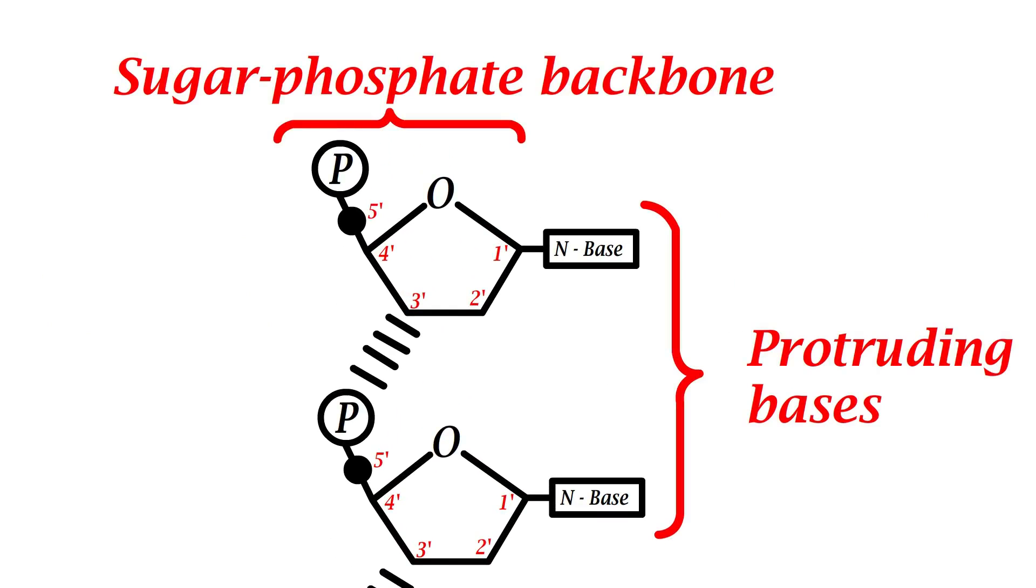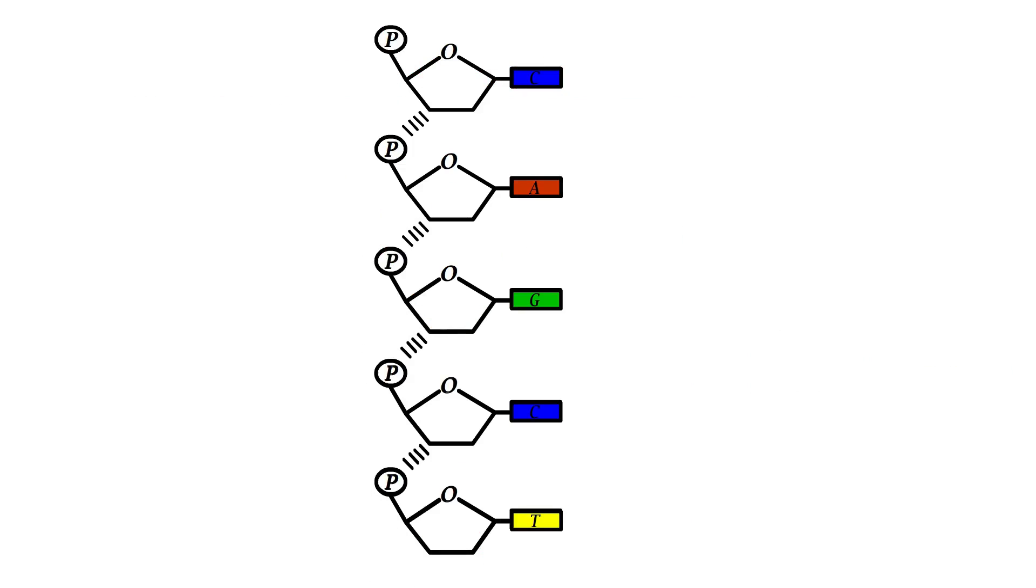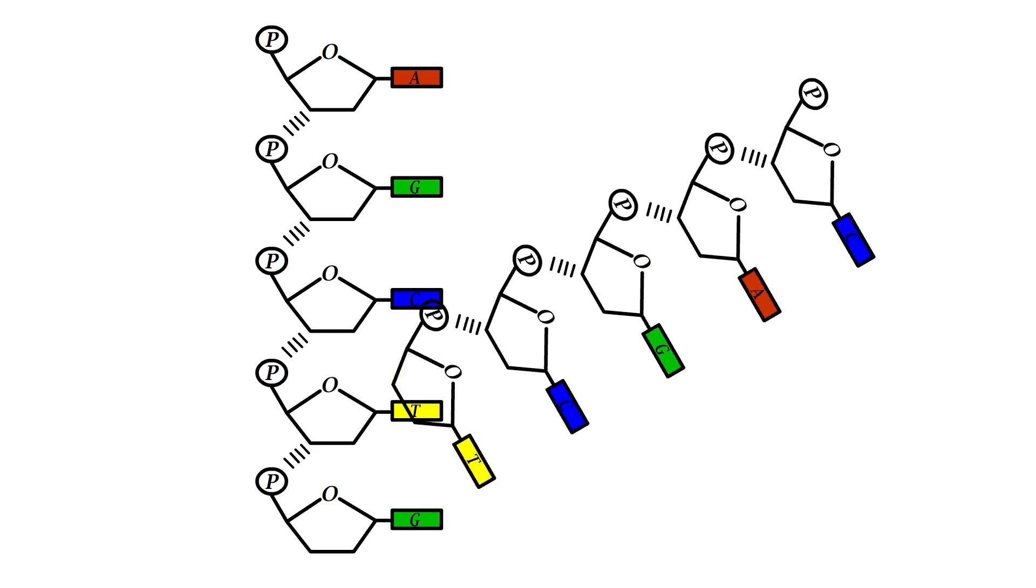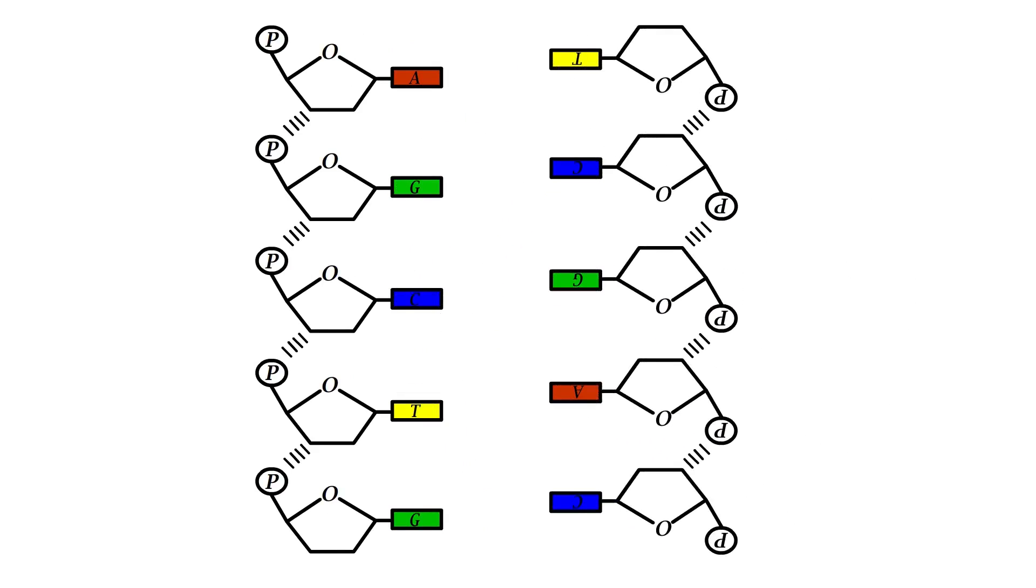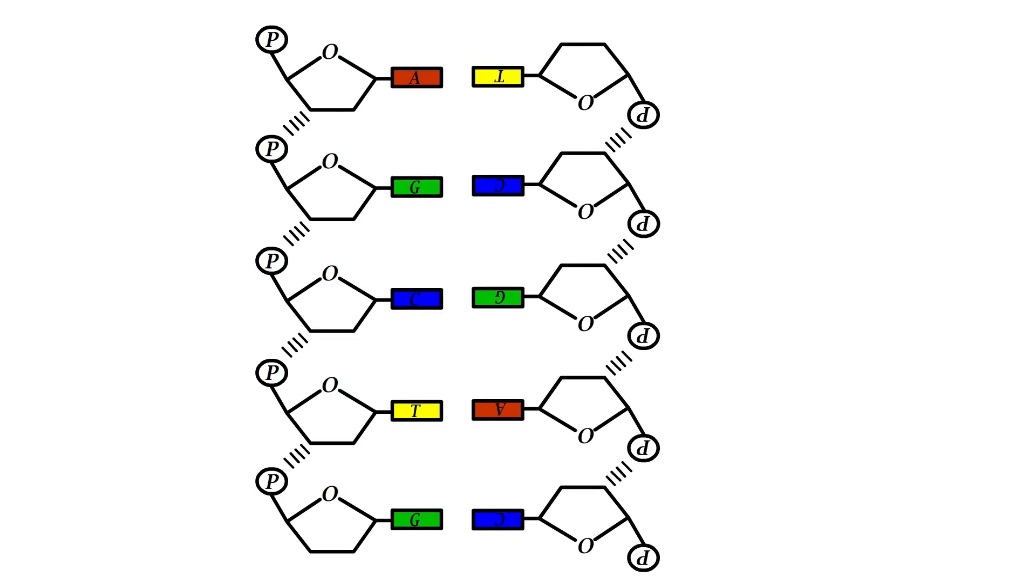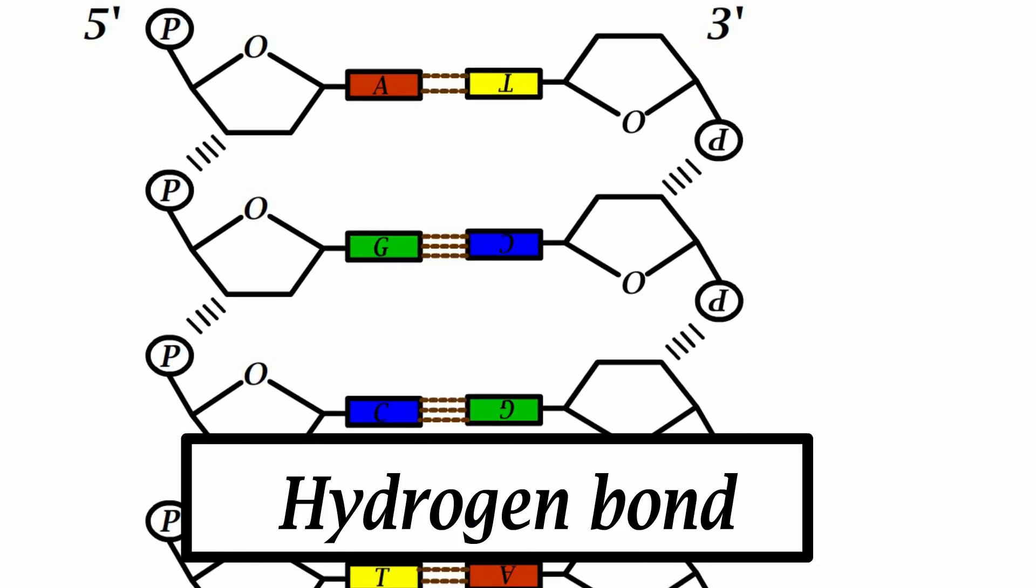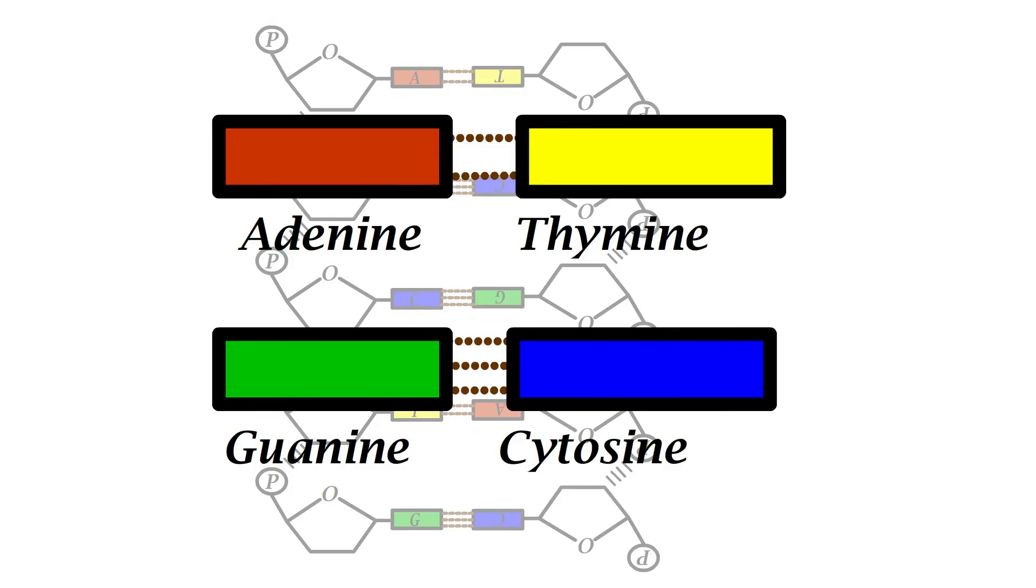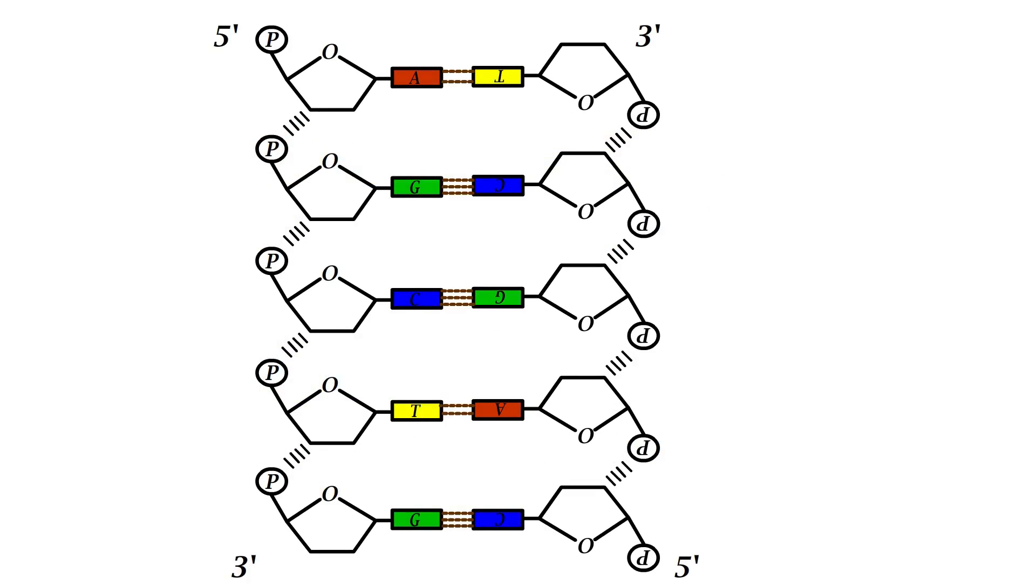The DNA is a double-stranded structure. Thus, there are two separate nucleic acid chains which are linked together by hydrogen bonds formed between their nitrogen bases. Here, the adenine is linked with a thymine by double hydrogen bond, and guanine with a cytosine by a triple hydrogen bond.